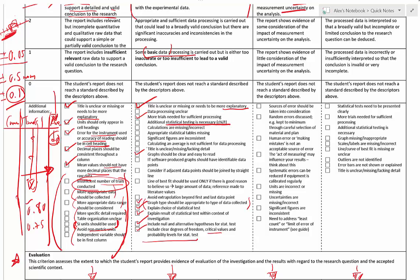If you have a graph, make sure it has its own clear title, significant figures are consistent, and statistical tables with critical values can go at the end. If you're using software like Logger Pro or Excel, don't just use the software defaults — make sure your choices are appropriate for answering your research question and looking for patterns. Do it by hand if you're not sure.